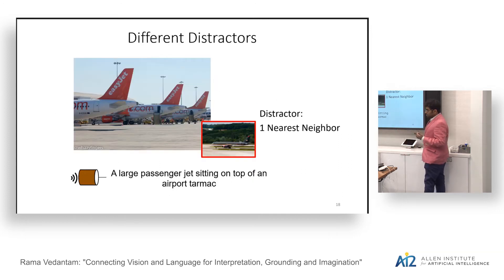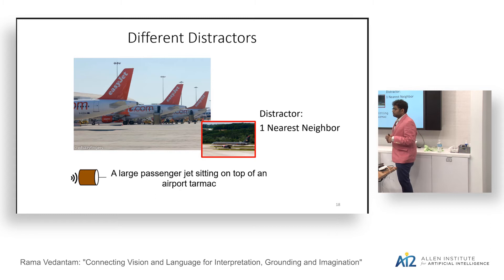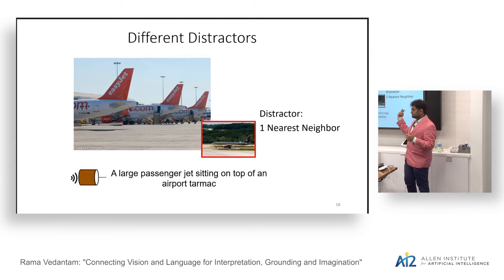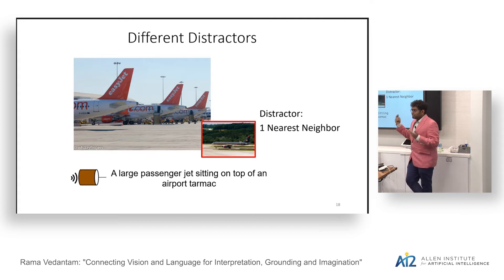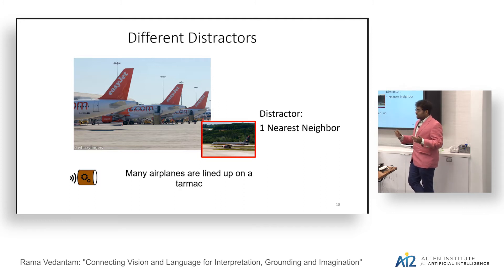Looking at qualitative results: with the target image and a nearby distractor, a regular captioning model says 'a large passenger jet sitting on top of an airport tarmac,' which applies more to the distractor. Our model says 'many airplanes are lined up on a tarmac,' which is more discriminative and refers to the target more appropriately. Now if I replace the distractor with a random image — a bunch of elephants in a field — our model says 'Virgin Virgin airliners taxiing airplane at terminal underpass,' which shows failure when images are too different.